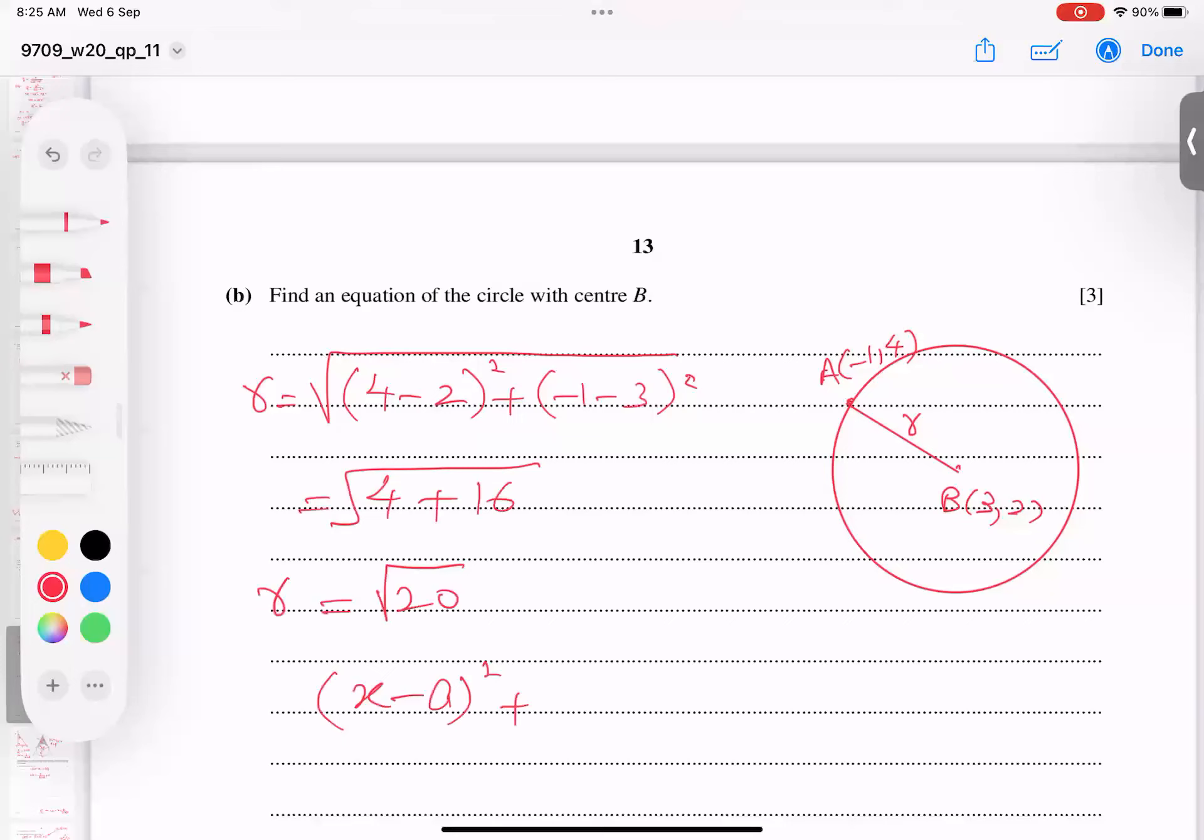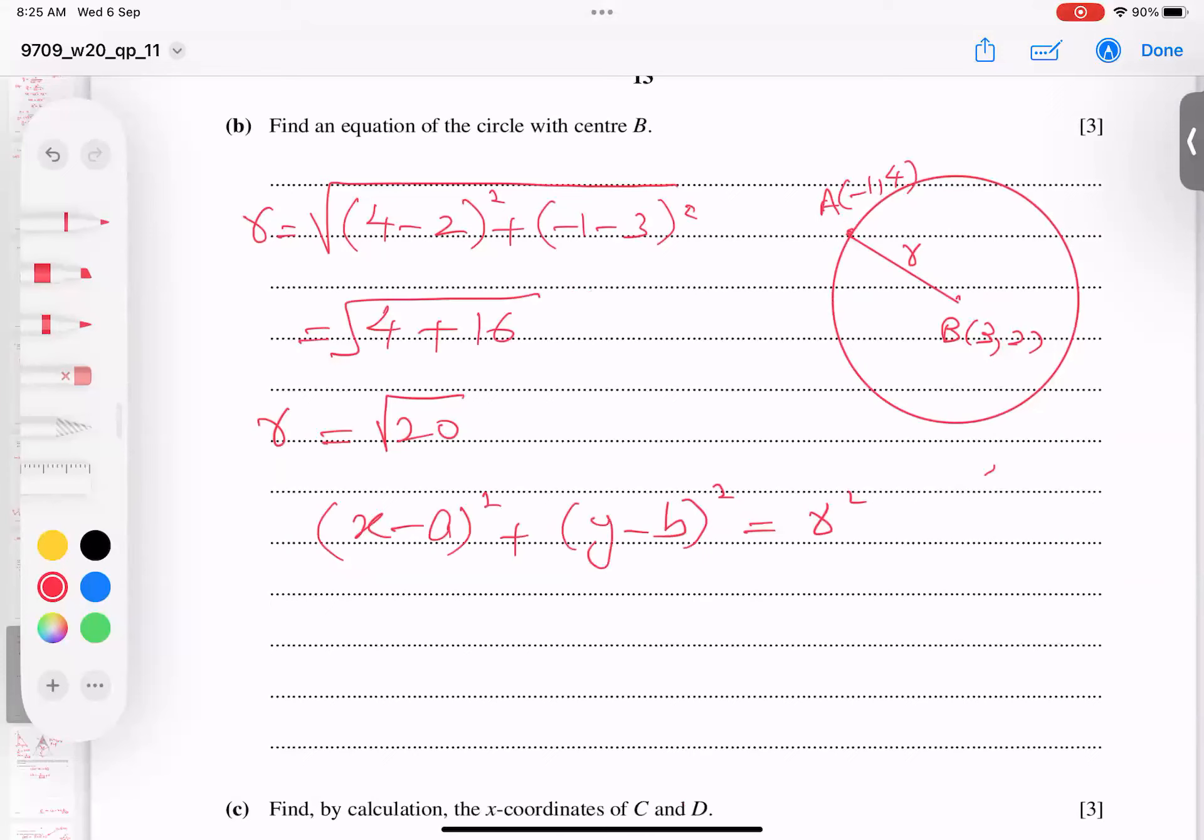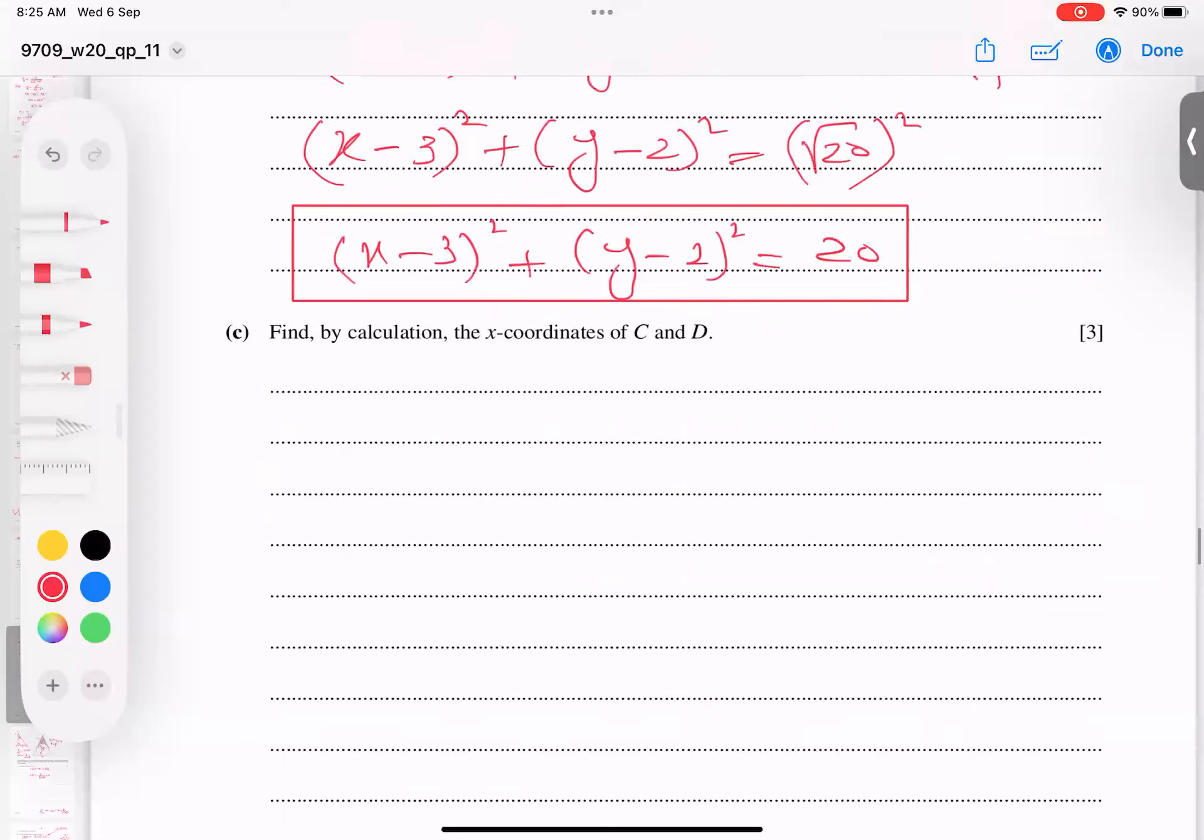Now what is the formula for circle? X minus A whole square, Y minus B whole square, equal to R square. This is called square form of circle. So square form which I'm writing now. And what is A center? So coordinates, so 3 will come here, 2 will come here. And I get finally X minus 3 whole square and Y minus 2 whole square. Radius is root 20, and root 20 whole square, this cancels out. No need to expand. This is our final answer.